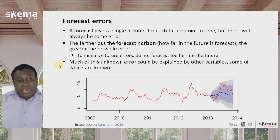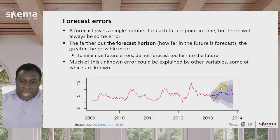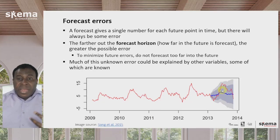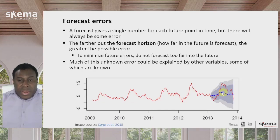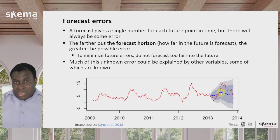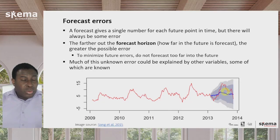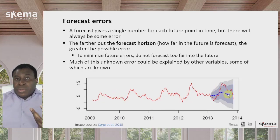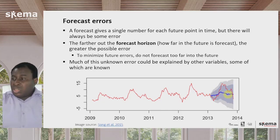The errors are not the end of the story, because much of the error — how far off the actual value is from the predicted — could be explained by other variables, and some of these other variables might be known. For example, if these are sales estimates and your actual values are a little bit off, some of that might be explained by how much advertising you did that month, or how much sales your competitors made. If you have a way to consider other variables beyond just the one variable itself, that could increase the accuracy of your estimates. This is exactly what multivariate time series analysis tries to do.